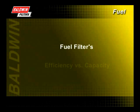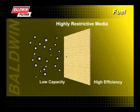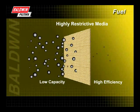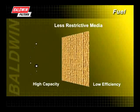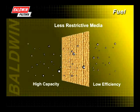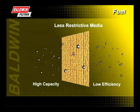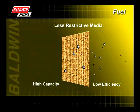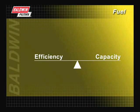When choosing a fuel filter, consideration must be given to the filter's efficiency as it relates to its capacity. A filter with high efficiency often means reduced capacity because the media is more restrictive to flow, and the filter life will be shorter because it captures smaller contaminants. A filter with high capacity often means reduced efficiency, with longer filter life because it allows smaller contaminants to pass through. In both situations, a middle ground between efficiency and capacity is desired.